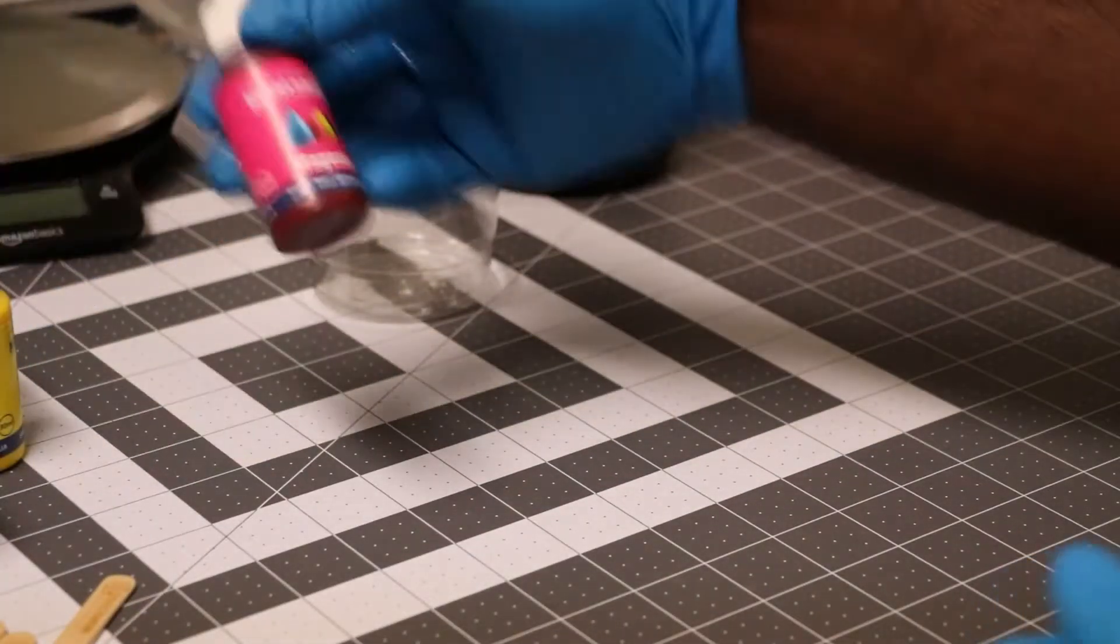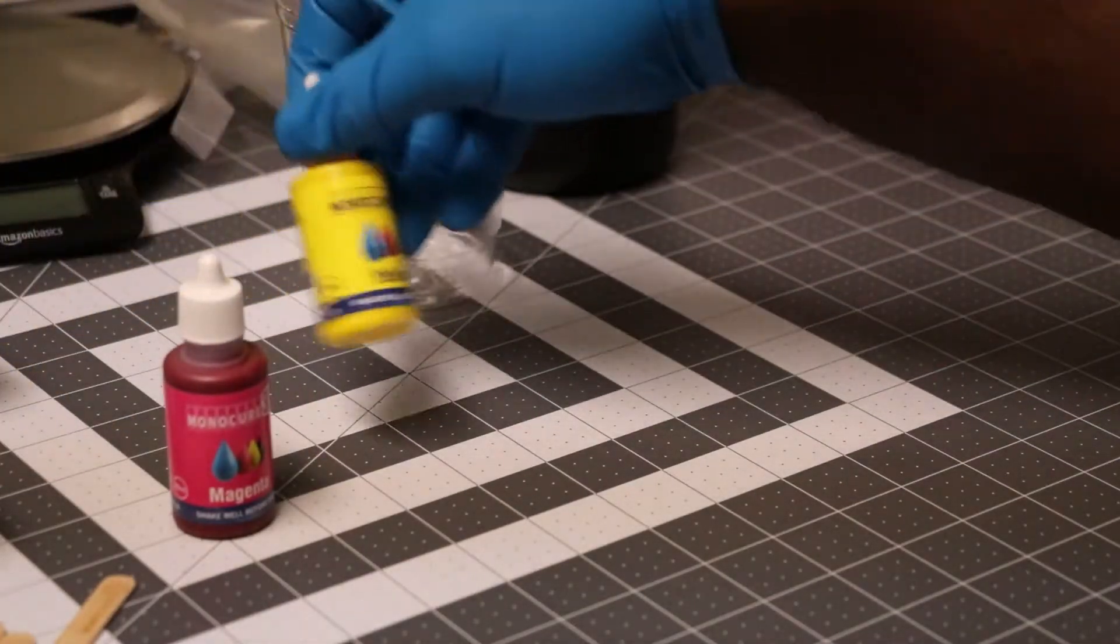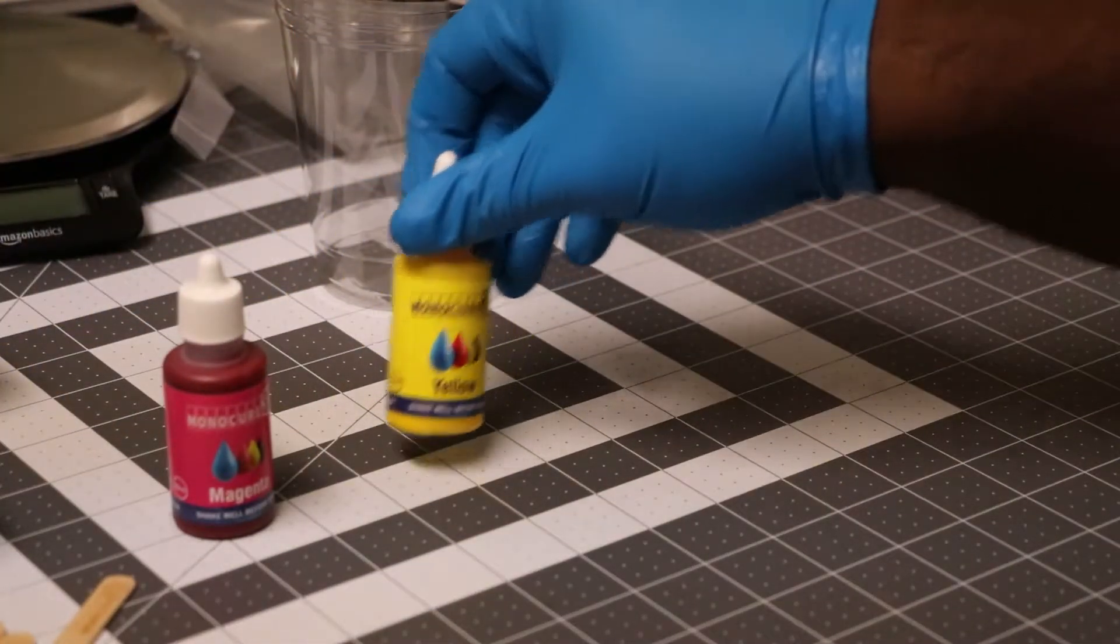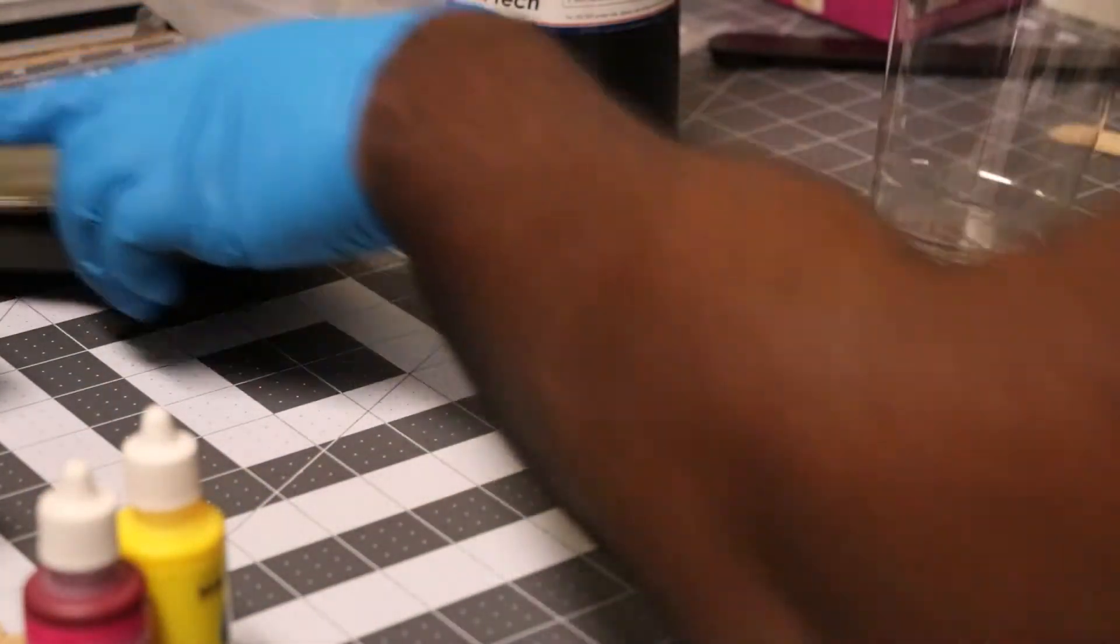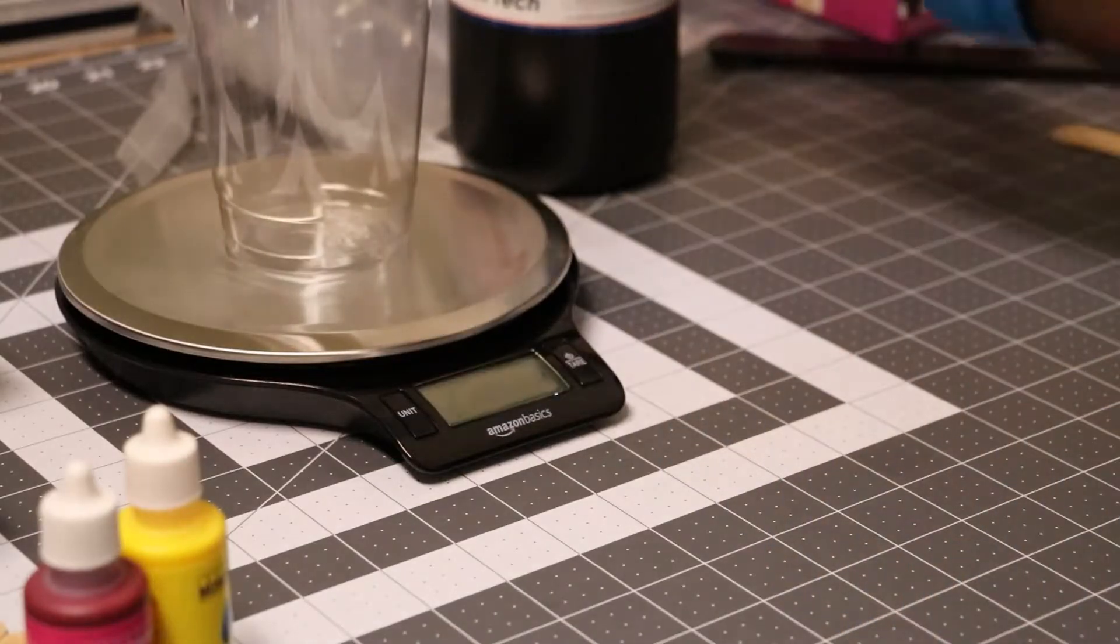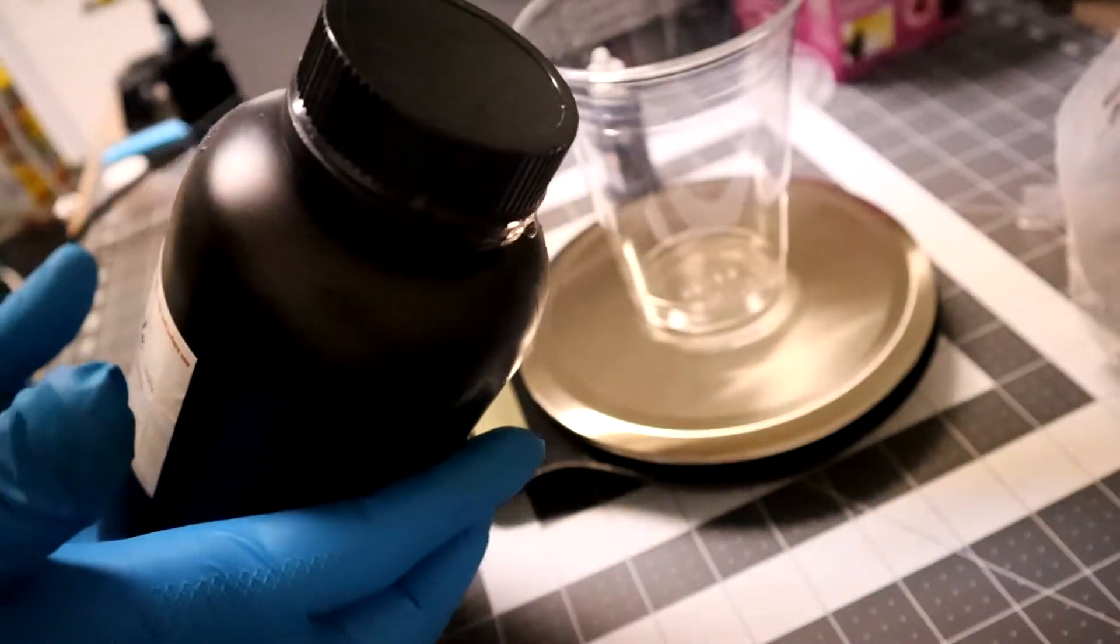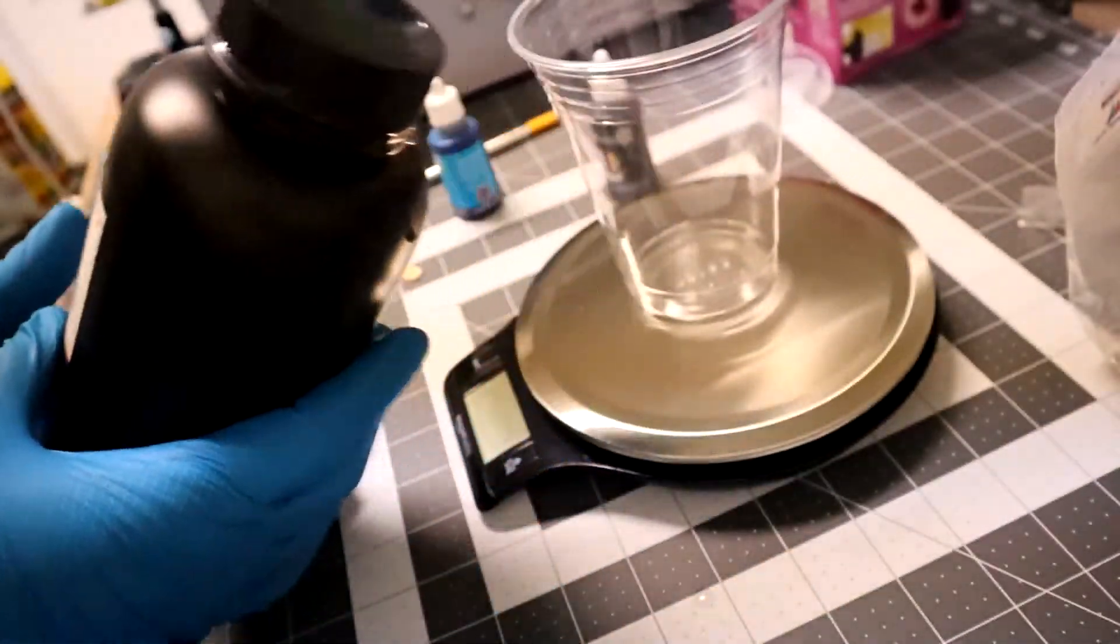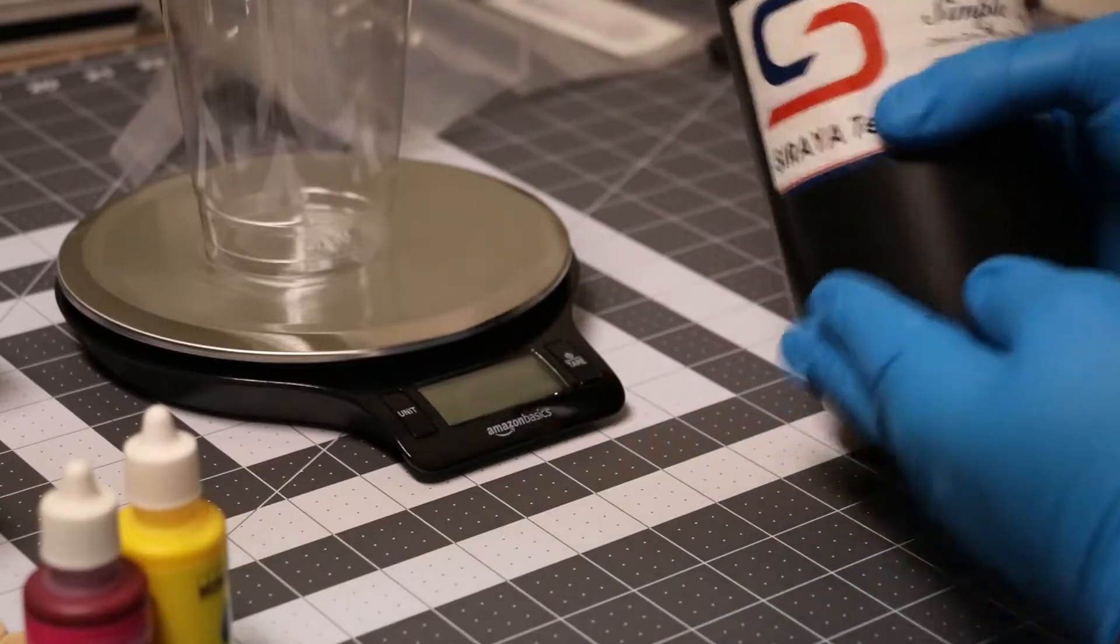Now we're going to mix up a small batch of clear resin. I'm going to dye it orange for a Dragon Ball Z project I'm currently working on. This recipe I looked up, the CMYK values on the internet, calls for magenta and yellow. I'm using Siraya Tech Simple resin because it's clear and also easy to clean with only 15% isopropyl alcohol.